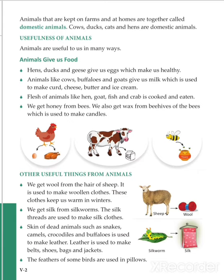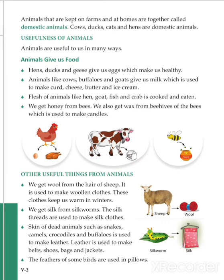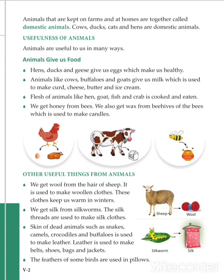Animals are useful to us in many ways. Animals like hens, ducks, and geese give us eggs, which keeps us healthy. Animals like cows, buffaloes, and goats give us milk, which is used to make curd, ghee, butter, and ice cream. Milk is a good source of protein. The flesh of animals like hen, goat, fish, and crab is cooked and eaten.